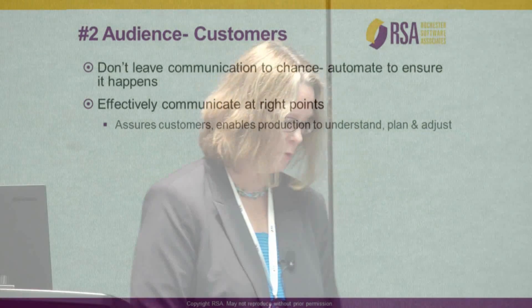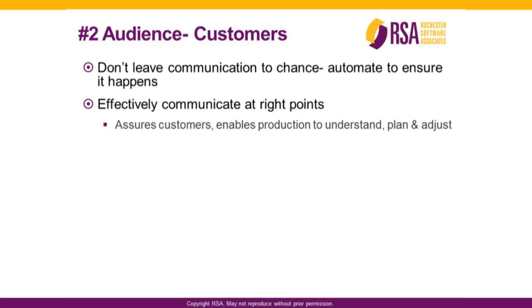For customers — don't leave communication to chance, automate it to ensure it happens. Using workflow software or something like Web2Print will help you communicate and ensures customers that things are proceeding as they should. You're not doing it manually. It also enables your production team to understand, plan, and adjust because they can see where there are kinks or whether things are going smoothly. Communicating at the right points assures customers that everything's happening and lets you answer questions along the process and think about who else needs to be communicated with.